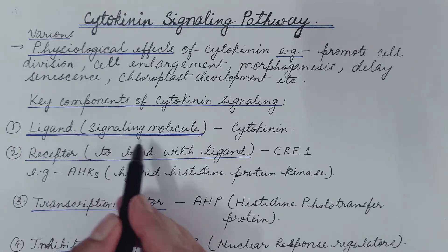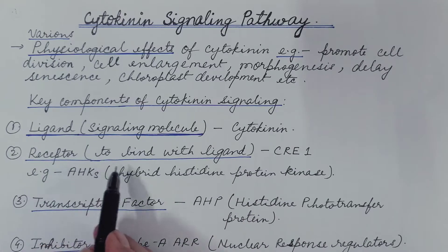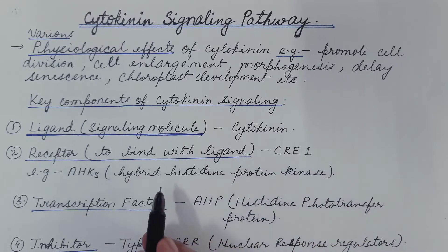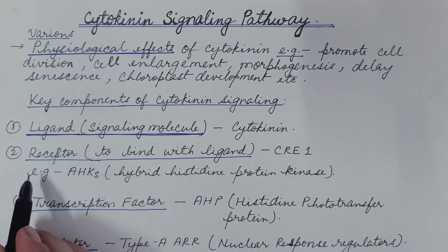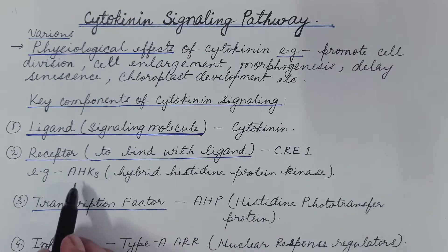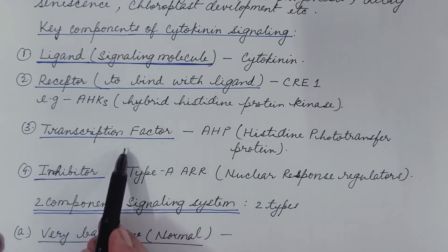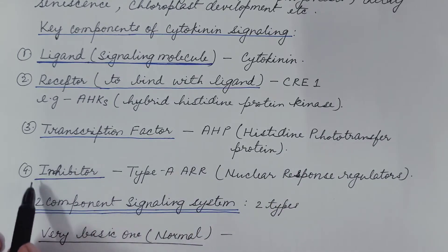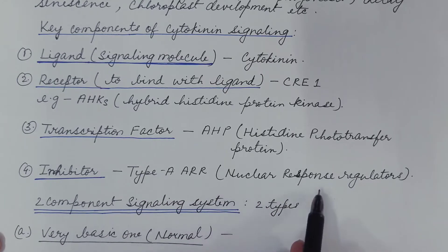First is the ligand, which is the signaling molecule — here it is cytokinin. Second is the receptor, which binds with the ligand. In this video, we will discuss about cytokinin signaling in Arabidopsis plant, where the receptor is AHKs — A stands for Arabidopsis — hybrid histidine protein kinases. Third is the transcription factor, AHP — histidine phosphotransfer protein. Fourth is the inhibitor: Type A ARR, arabidopsis nuclear response regulators.